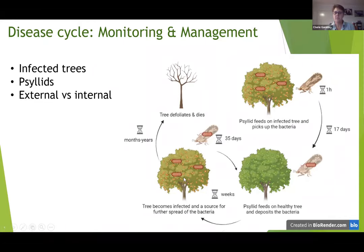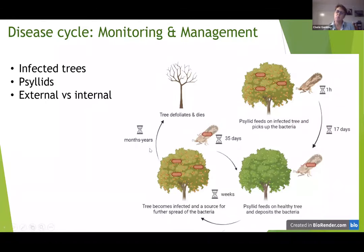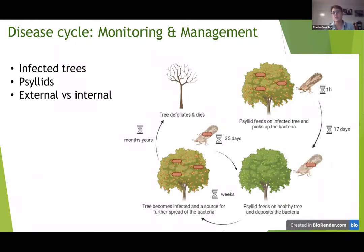Once a tree becomes infected, it can take months or years until the bacteria spreads over the whole tree, and then the tree eventually defoliates and dies. It's important to know this so that when you're monitoring and managing, you need to know whether you want to monitor the infected trees or the psyllids, and whether you're looking at external or internal sources of the bacteria or the psyllid — and it lets you find opportunities where you can have impact on that spread.